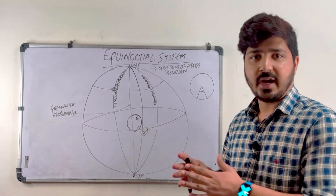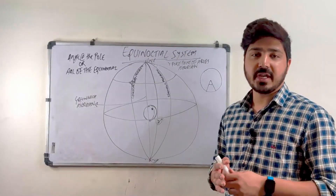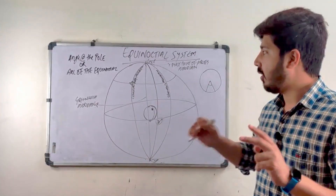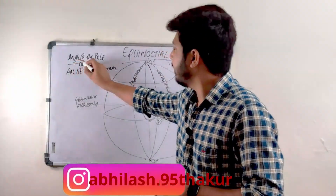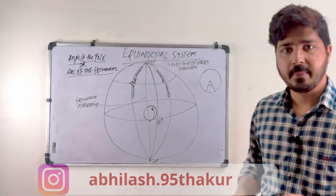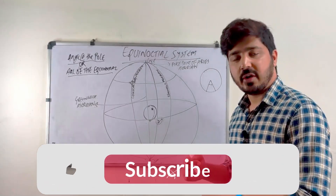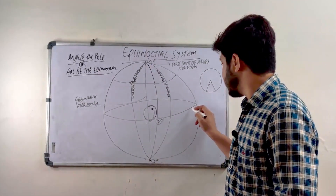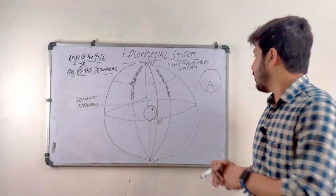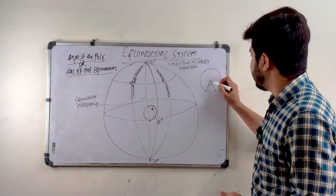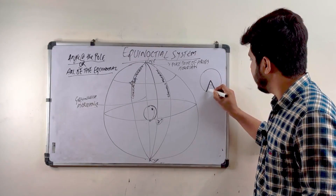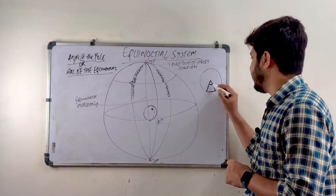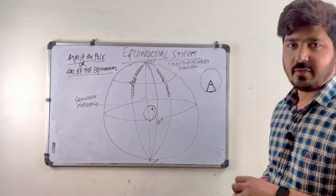If these things are clear to you, it will be very easy to understand the GHA, RA, SHA, and everything. Now we are going to start with the SHA — that is Sidereal Hour Angle. These two terms will be repeated in all the definitions: 'angle at the pole' or 'arc of the equinoctial.' In a circle, if you make any sector, the angle is equal to the arc — we learned this in school. The same principle is used here.